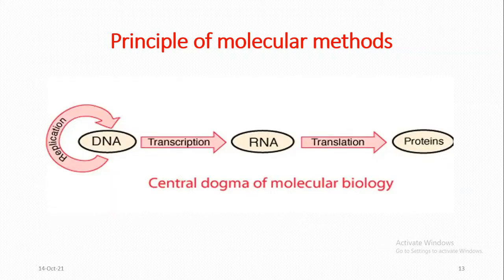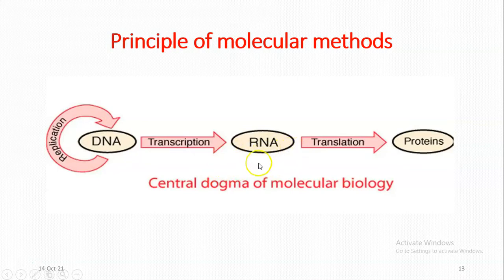This picture shows the central dogma of molecular biology. From DNA replication, DNA is transcribed into RNA or messenger RNA, which is then translated — the information is used in making or manufacturing proteins. This is how the genes we talk about are being expressed.